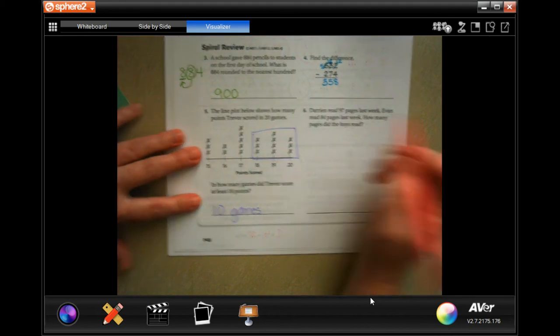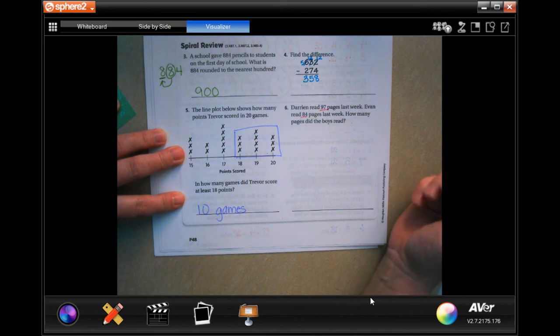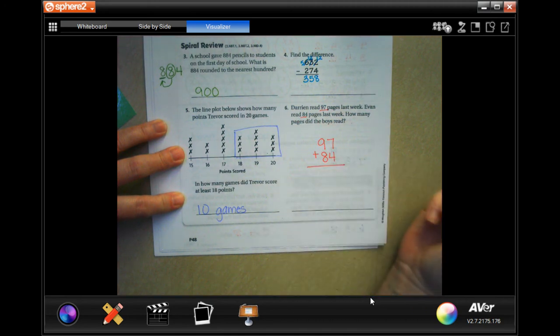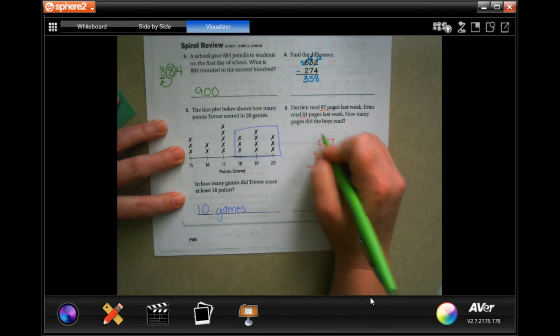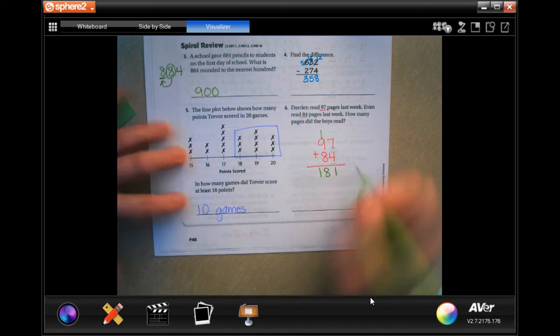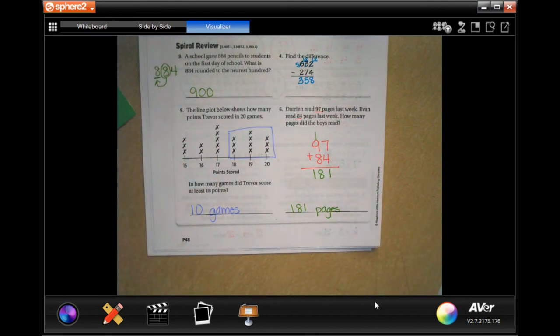Gary read 97 pages last week. Evan read 84 pages last week. How many pages did the boys read? 97 plus 84. We're going to go seven plus four is 11. Carry the one. One plus nine is 10 plus eight is 18. So 181 pages. All right, guys. Thanks for hanging out for 3.2. See you soon in 3.3.